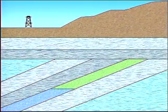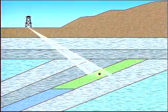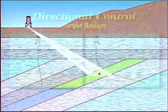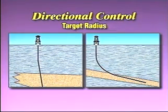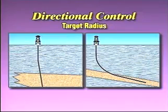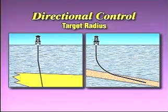Our goal in planning a well profile is to determine the most economic path from the surface to the bottom hole location. We first have to determine the target coordinates with respect to the proposed surface location. At the same time, we have to assign the target radius based on our well objectives. This target radius indicates how tightly we have to control the well trajectory.